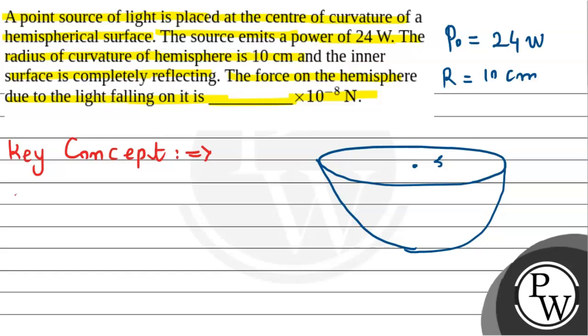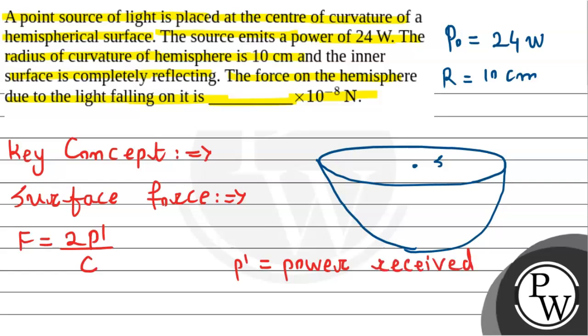We remember that the concept of surface force can be given by F = 2P'/c, where c is the speed of light in vacuum and P' is the power received by the surface.